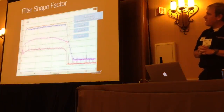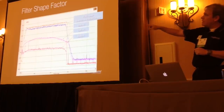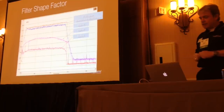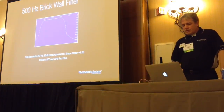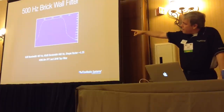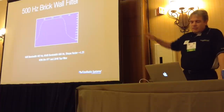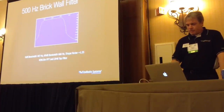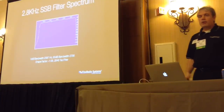Here are some examples of filter shape factors. Several came from real analog radios, but the red one came from an SDR. You can see that although it's not a perfect brick wall, it does go straight up, across the top, and pretty much straight down. In the Flex 6000 series, our 500 Hz brick wall filter has some taper, but it's down at minus 100 dB — way down in the noise. It has a shape factor of 1.35. Our sideband filter at 2.8 kHz has a 1.06 shape factor. A 1.0 shape factor is perfect.